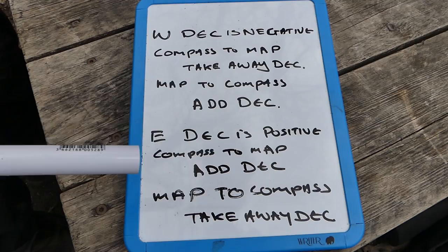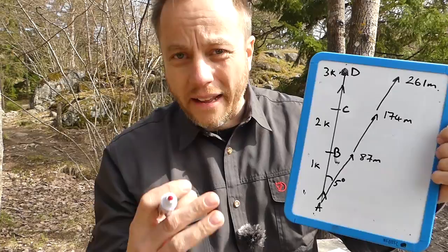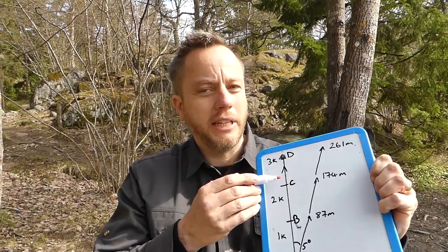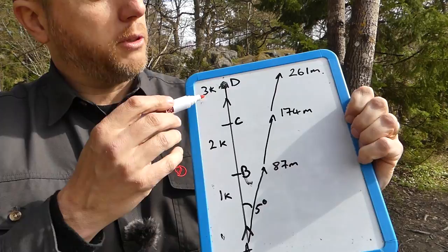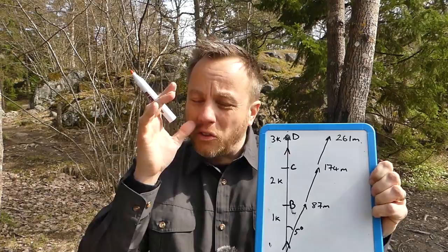Now, having gone through the basics of declination and the different types of north, I'm going to explain why for 90% of land navigation you don't have to worry about it. Let's look at how declination affects navigation in a sterile environment. Say I want to travel from point A to B to C to D, with B one kilometre away, C two kilometres, D three kilometres. With a declination error of five degrees east, if I didn't compensate and walked in a straight line, by the time I reached B I'd be about 87 metres off course.